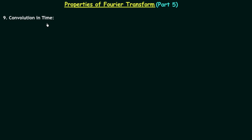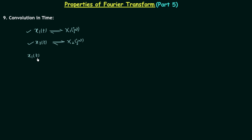In this lecture we will understand the convolution in time property of Fourier transform. Let's assume there are two time domain signals x1(t) and x2(t). The Fourier transform of x1(t) is X1(jω) and the Fourier transform of x2(t) is X2(jω). When we convolve x1(t) and x2(t), their Fourier transform becomes X1(jω) multiplied by X2(jω). So whenever we convolute two time domain signals, their Fourier transforms get multiplied. This is property number nine: convolution in time.